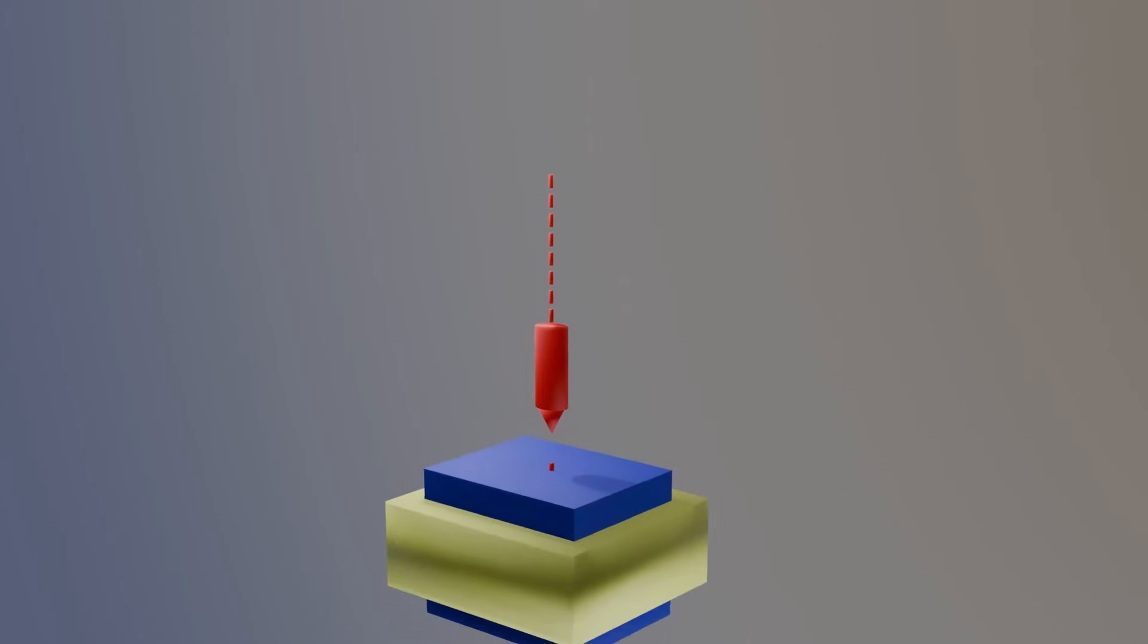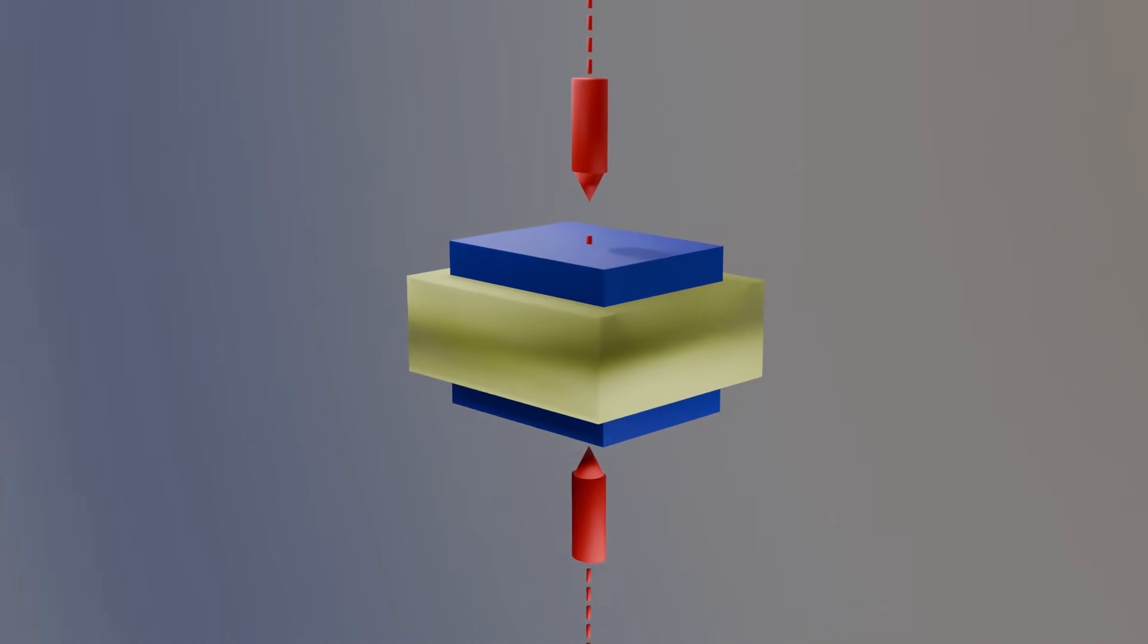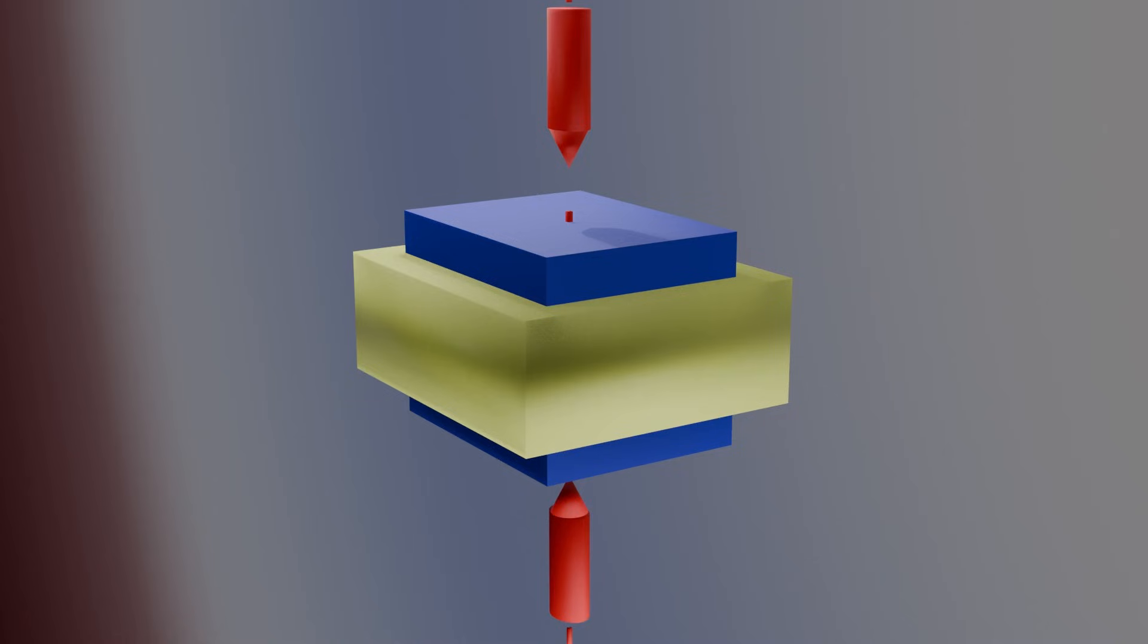Now, let's take a closer and more precise look at the Poisson's ratio when a compressive load is applied to an object. Imagine our cube again.